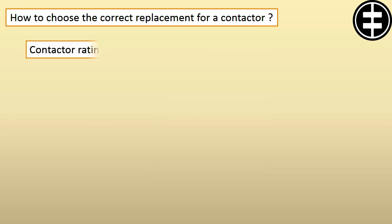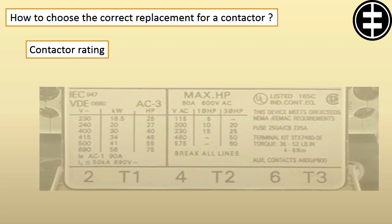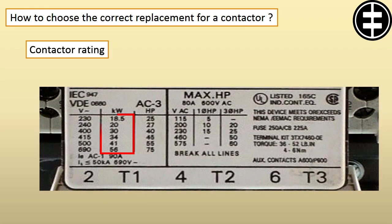Third, check the contactor rating. It is the contactor's designed capacity, and it is printed in a table on the contactor. If we check this contactor table, it is written from 18.5 to 56 kW. Which one is the contactor rated? It depends on your load. If your load is a motor, you have to check the AC3 table. Then say your power network voltage is 400 volts, that means this contactor rating is 30 kW.